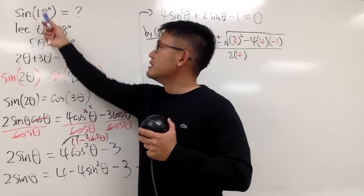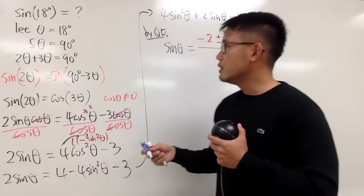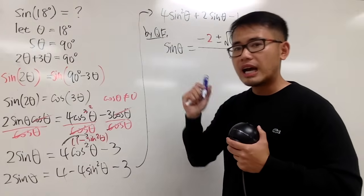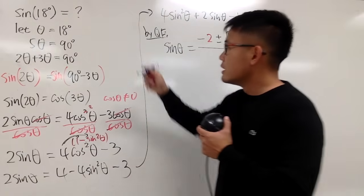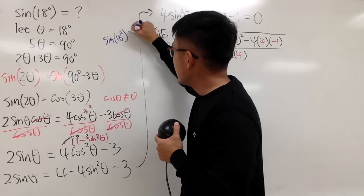Theta is 18, and then sine of 18 degrees, of course, 18 is in the first quadrant, so sine of 18 degrees has to be positive. So, notice that sine of 18 degrees has to be positive.